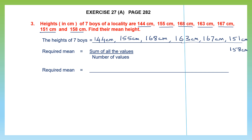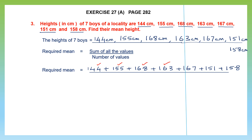So let's add up: 144 plus 155 plus 168 plus 163 plus 167 plus 151 and 158. We also need to find the number of values to divide by. Counting: one, two, three, four, five, six, seven — so we have seven values.